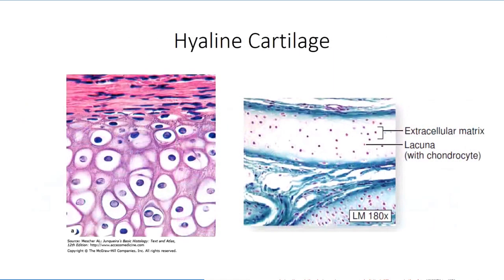The most abundant type is hyaline cartilage, which is found in the cartilage of the nose and ribs and lining the surface of synovial joints. The major protein component within the matrix is type 2 collagen. While the hyaline cartilage model that makes up the ribs and nose contains an outer perichondrium, that lining the synovial joints does not. Under the light microscope, the cells are typically packed close together, separated by thin extracellular matrix, though it's a little difficult to appreciate due to the pale appearance of the lacuna following shrinkage of the cell cytoplasm.